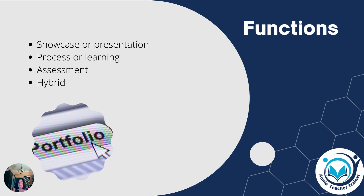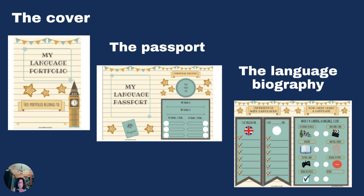Now let's have a look at the parts of the portfolio. We have the cover, where we have the name of the student, the class, etc. Then the passport, which contains factual information about the language learner. It gives a history of the learner's language learning experiences, and may also contain certificates and qualifications that show the student's level — a certificate from a summer camp, a qualification obtained from taking an international exam.